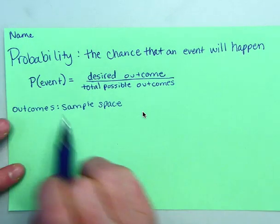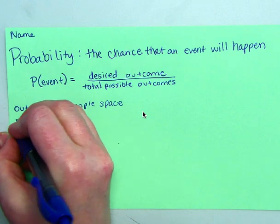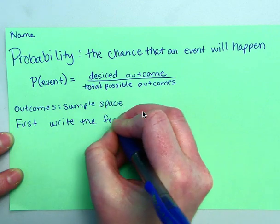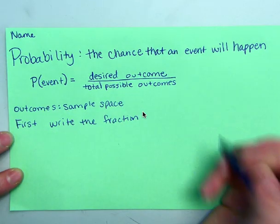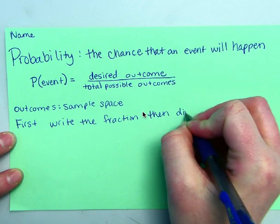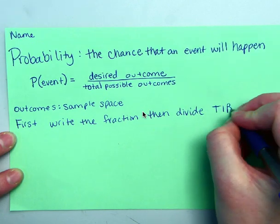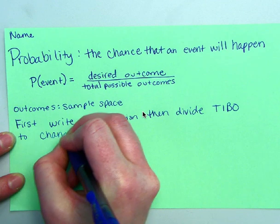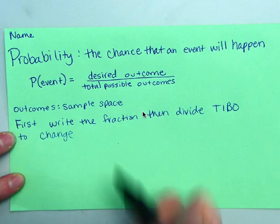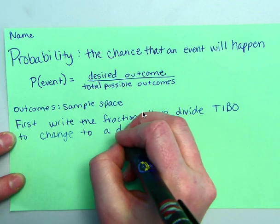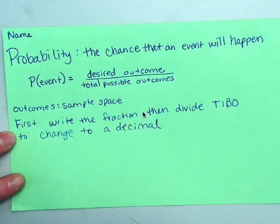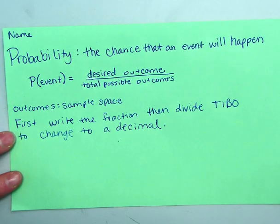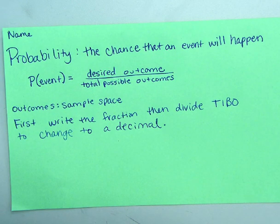Okay, so whenever you are finding the probability, the first thing you do, first write the fraction, just like above, then divide top and bottom out to change to a decimal. So probability is a fraction and then you convert it to a decimal.